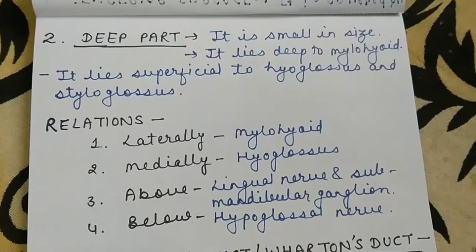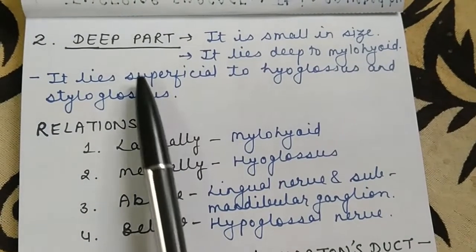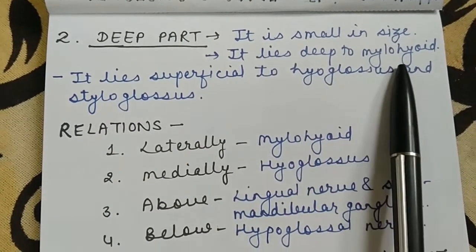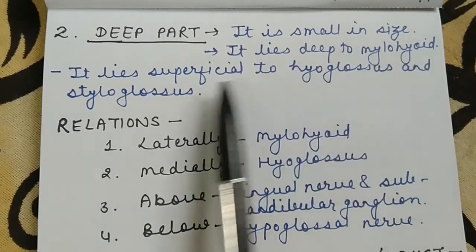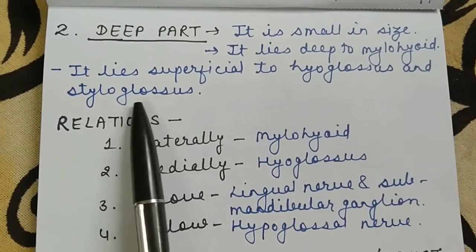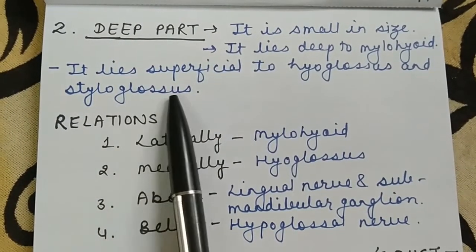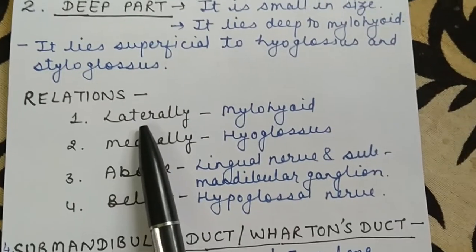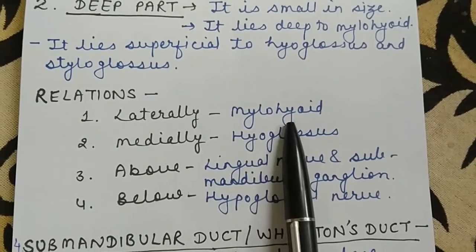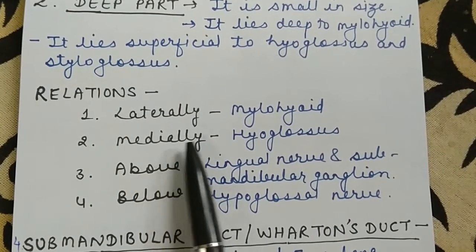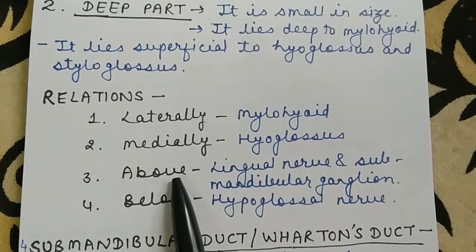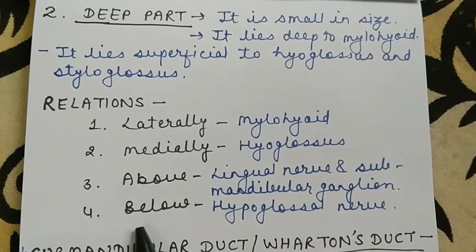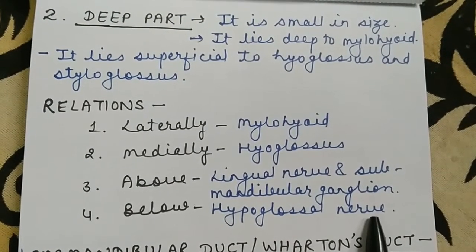The second part of submandibular salivary gland is its deep part. It is small in size. It lies deep to the mylohyoid muscle and superficial to the hyoglossus and styloglossus muscles. Relations of the deep part: laterally, the mylohyoid muscle; medially, the hyoglossus muscle; above, the lingual nerve and submandibular ganglion; and below, the hypoglossal nerve.